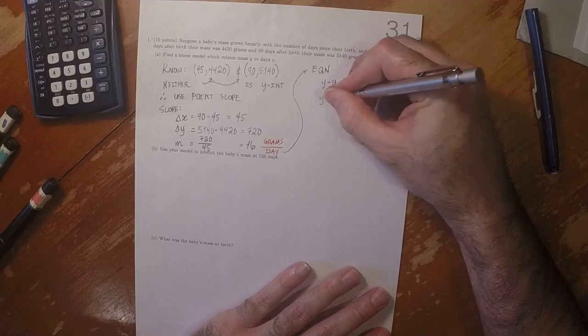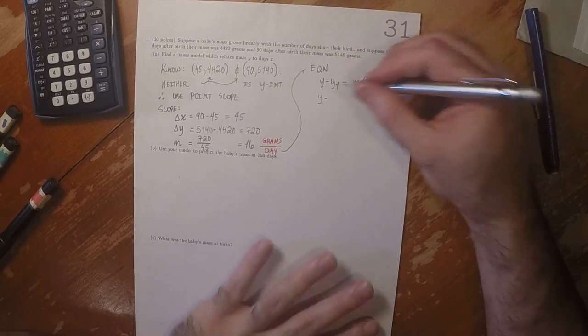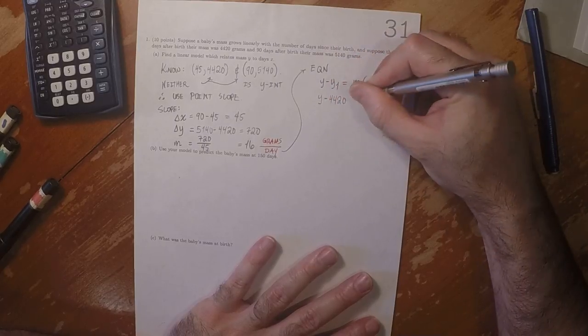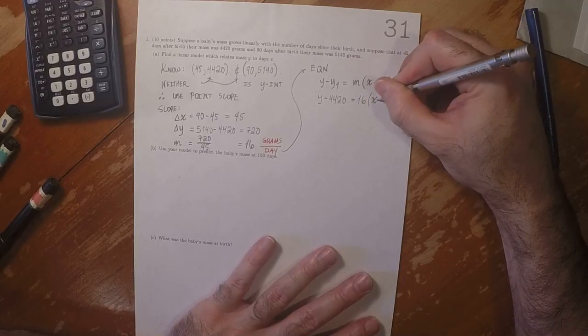So that'd be y minus, I'll use the smaller number, 4420 equals 16 times x minus 45.